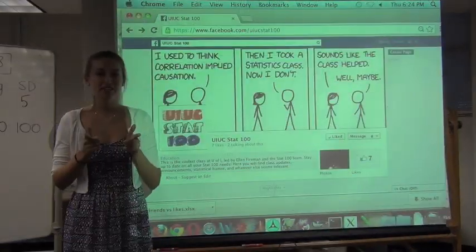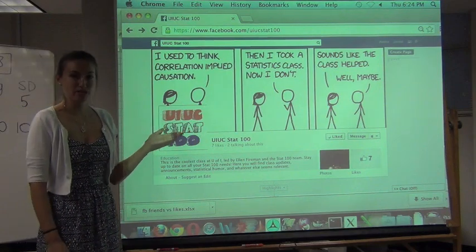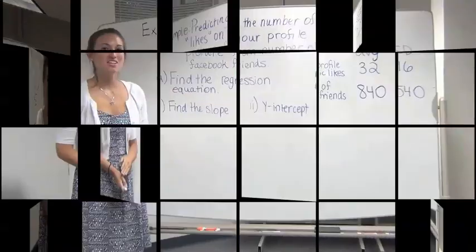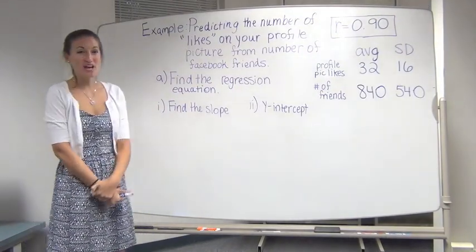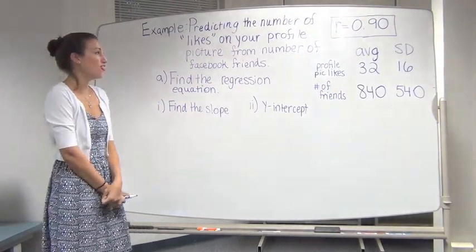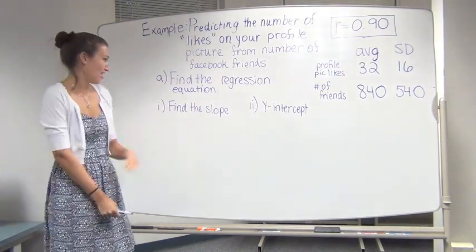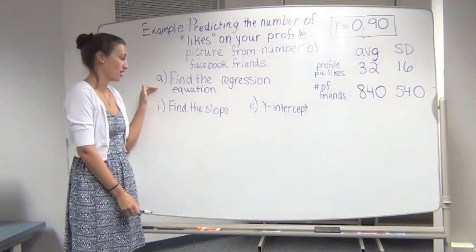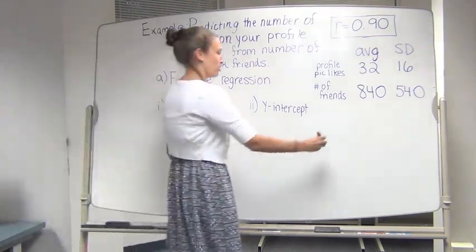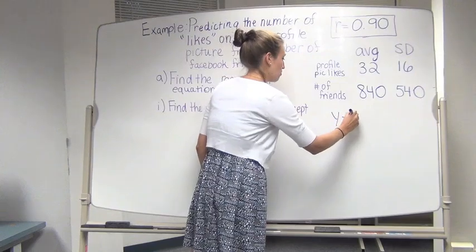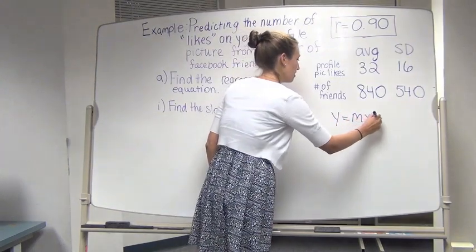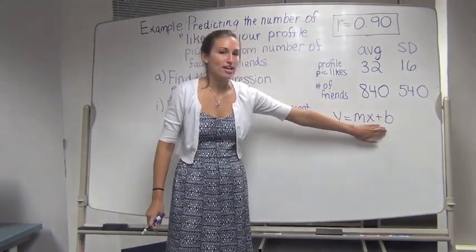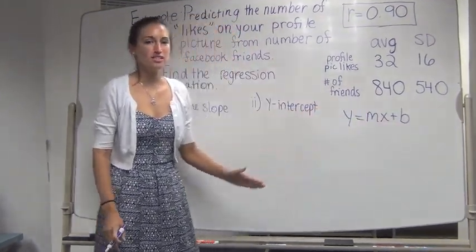And speaking of Facebook, everyone should go to our STAT 100 Facebook page and be sure to like it. So again, here we're looking at predicting the number of likes on your profile picture from the number of Facebook friends that you have. For part A, this is asking us to find the regression equation. Now, we said before that the regression equation is going to be in slope-intercept form. So it's going to look like y equals mx plus b, where m is our slope and b is our y-intercept. So those are the two things that we need to find.